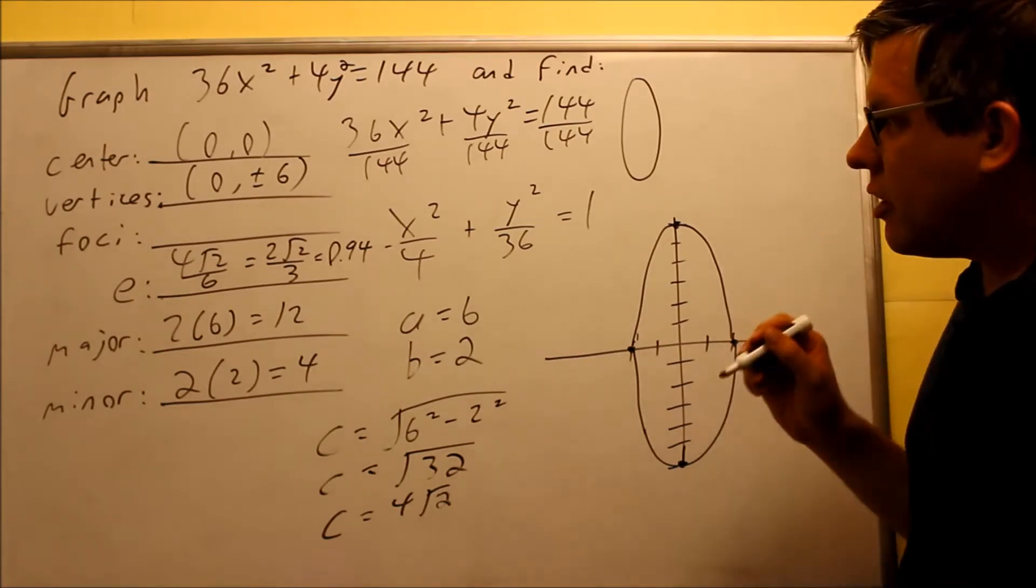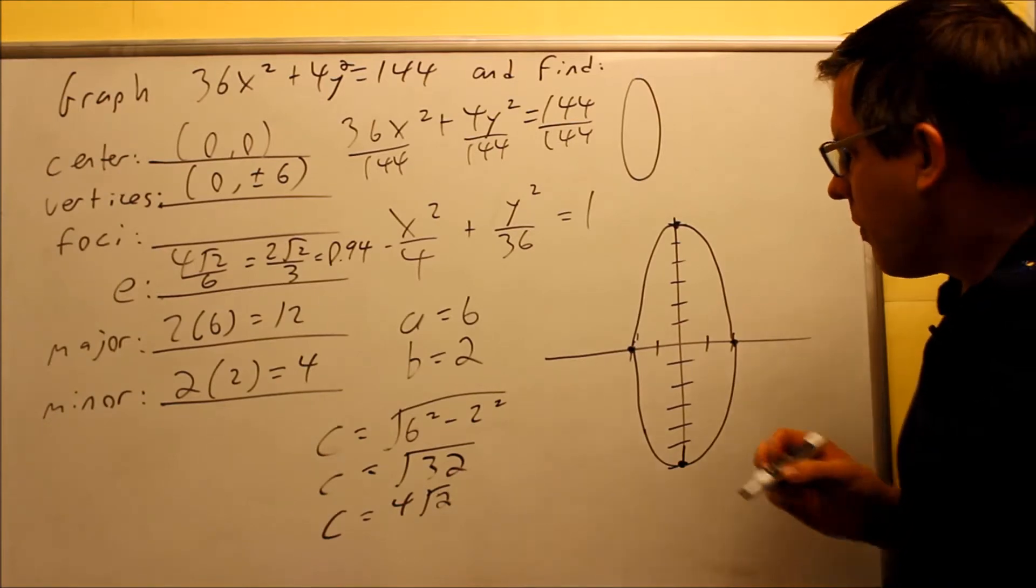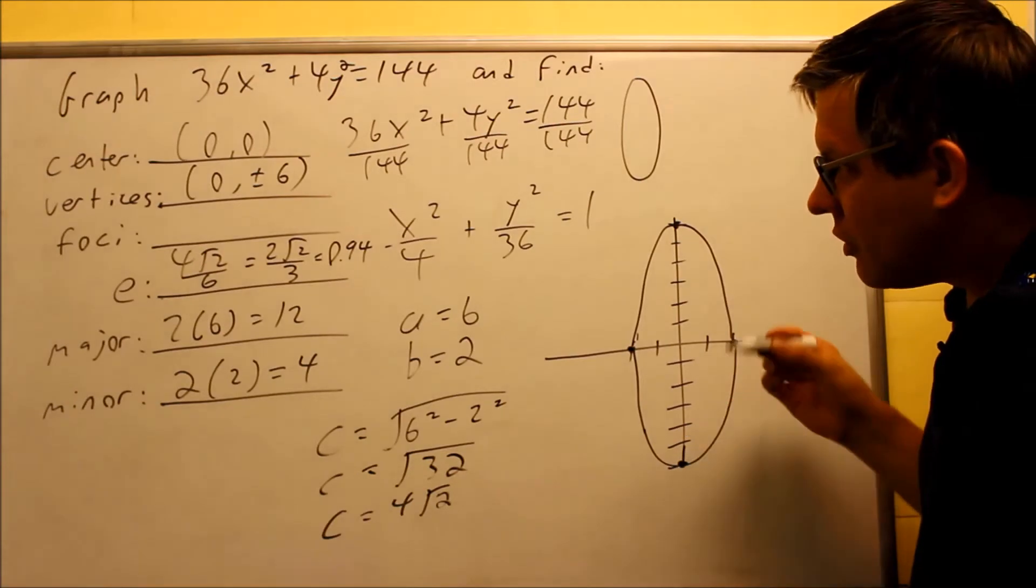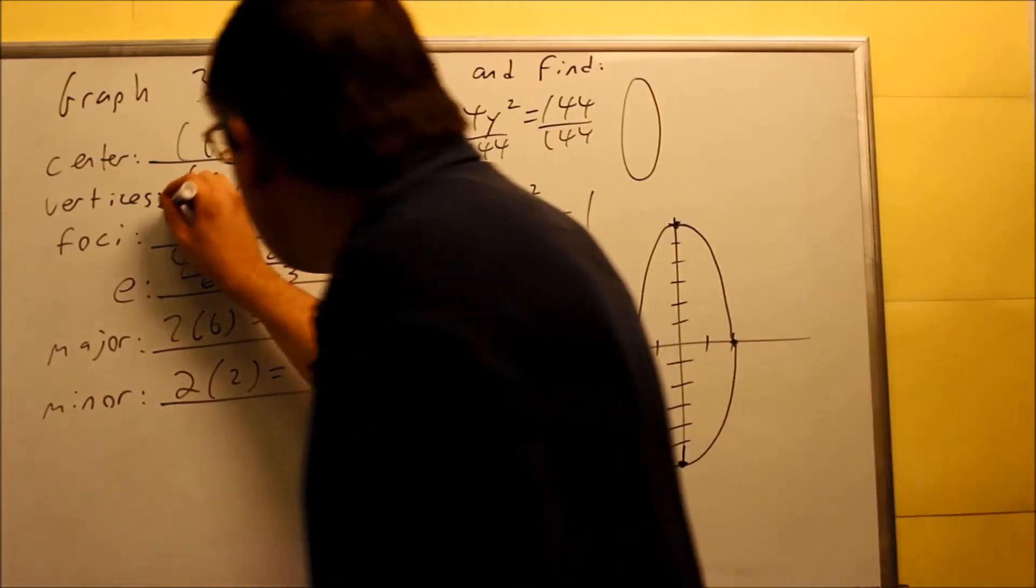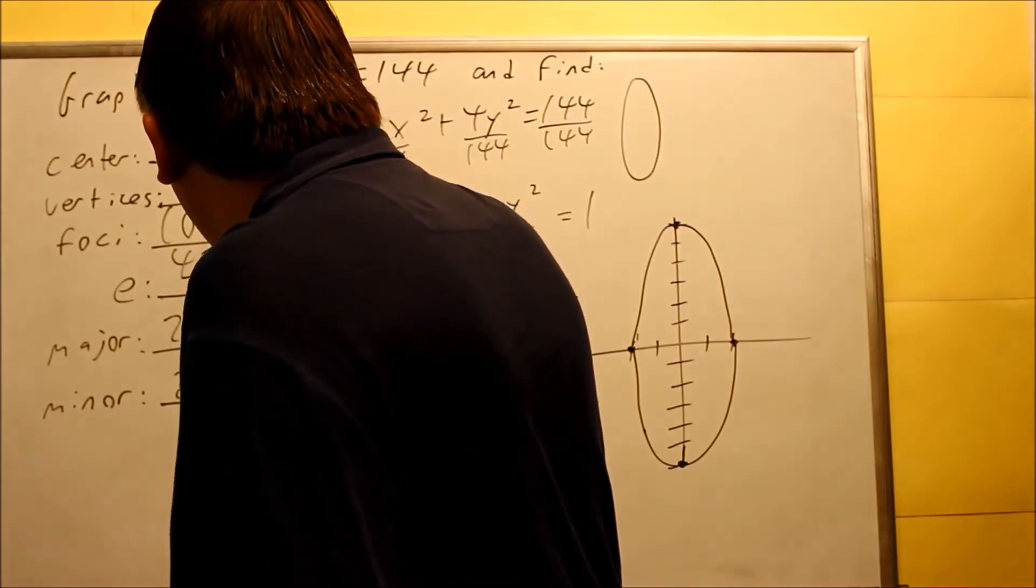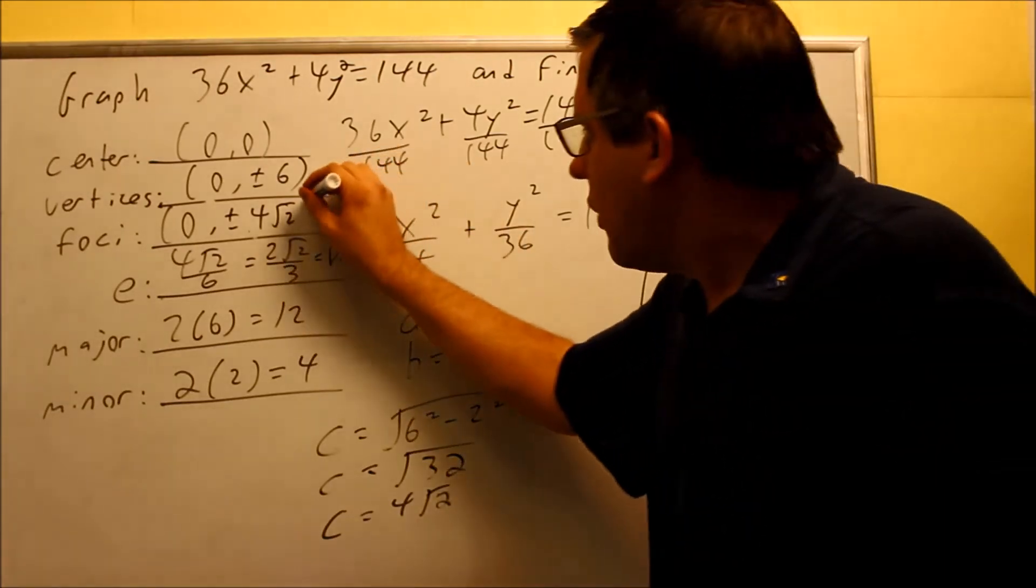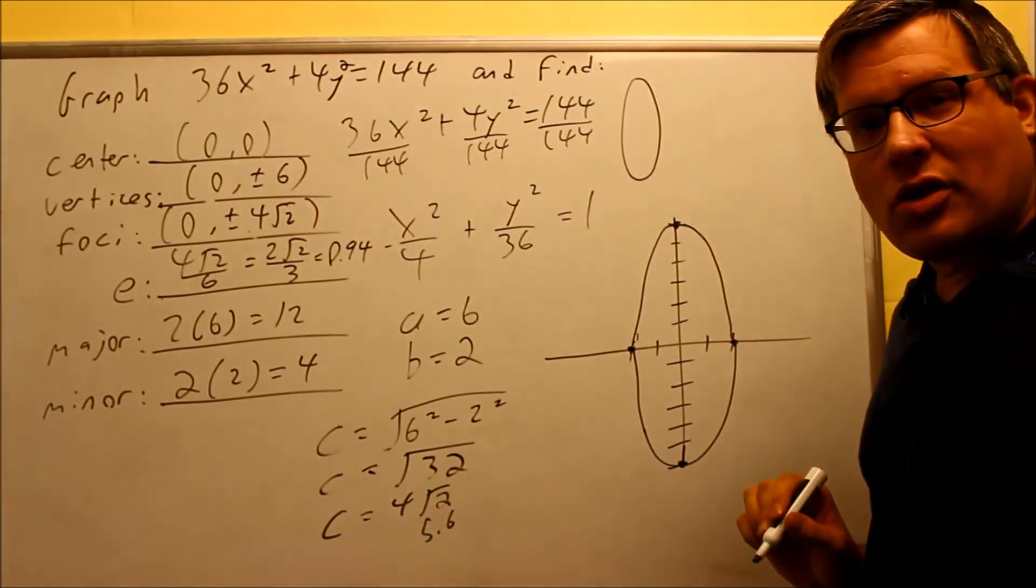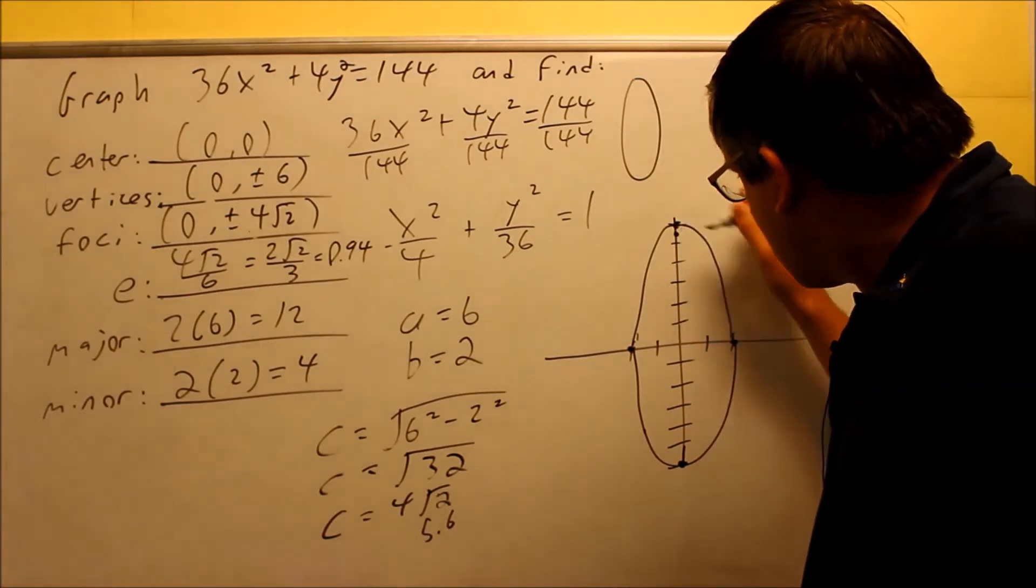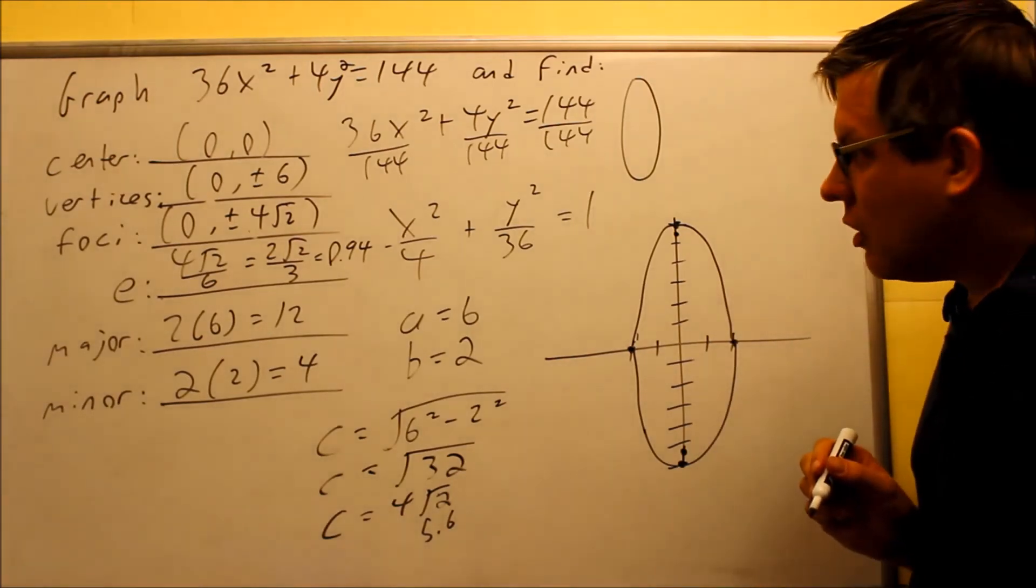And now we're going to use our c value. The c is 4√2. So basically from here you're going to go up 4√2, and you're going to go down 4√2, the coordinates for that would be 0, plus or minus 4√2. And the decimal of that, this is about 5.6 approximately, so we're going to go up 5.6, make a dot right here, down 5.6, we'll make a dot down below there, and that's where the actual vertices would appear.